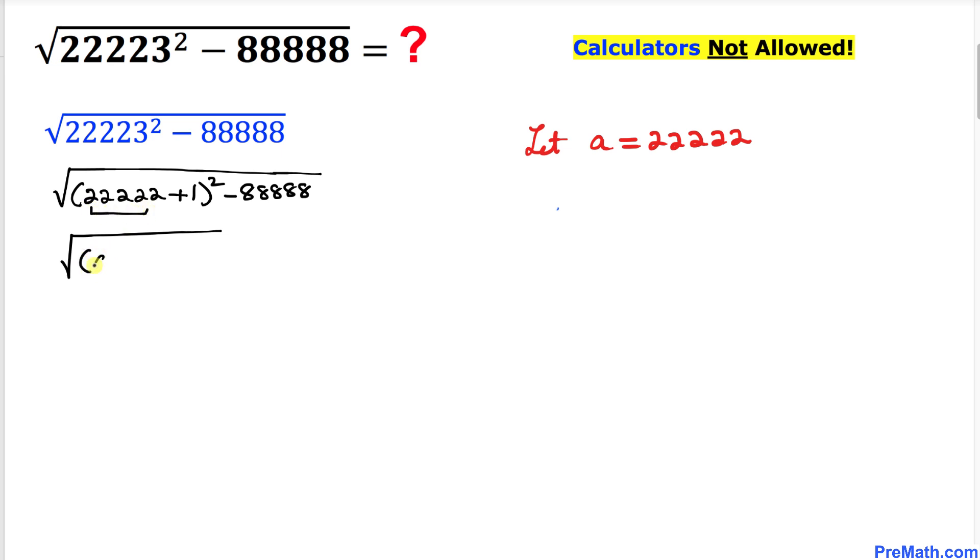And then minus, let's focus on this part now. Here I have copied it down, 88,888, and this could be written as 4 times 22,222, but this value is equal to A.